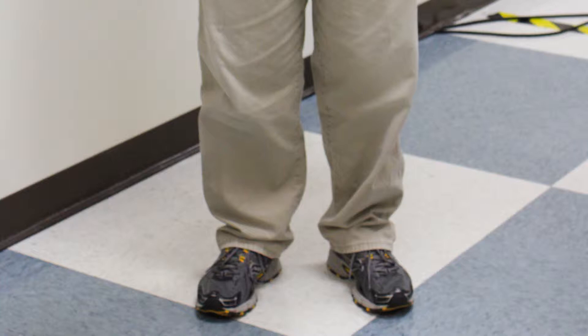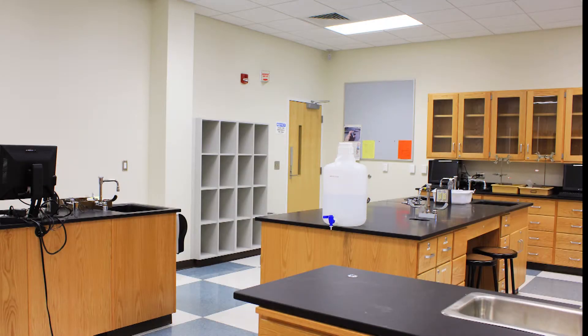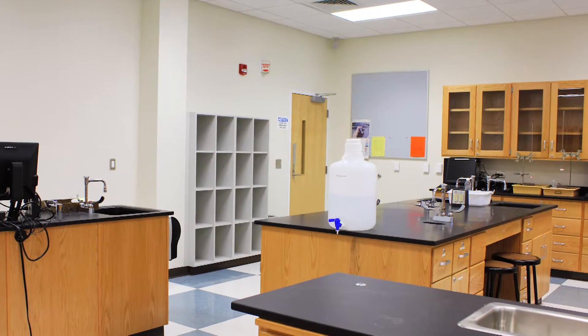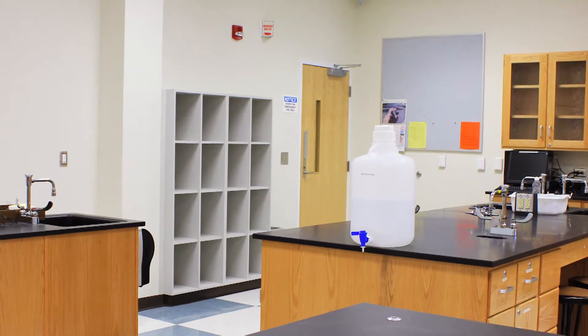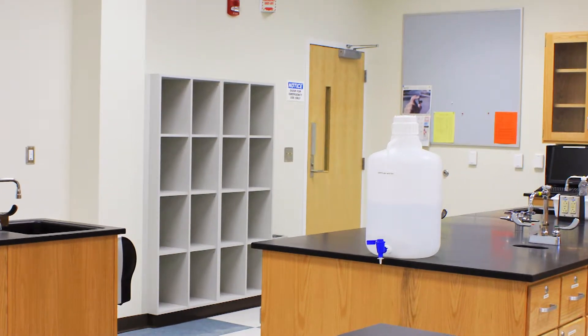When you first enter the lab, put on your safety glasses before you sit down. Place any unneeded books and coats in the appropriate place. This is by the emergency exit opposite from where you enter. Only bring your lab manual, something to write with, and a calculator if needed to your lab bench. It is not appropriate to place books or coats on the floor as they are a trip hazard.